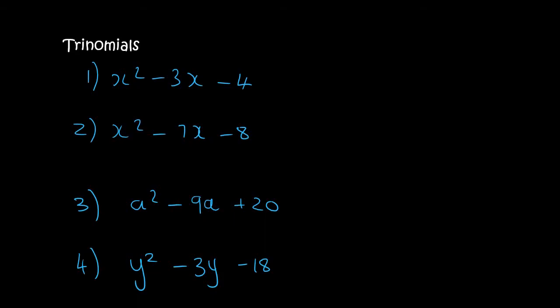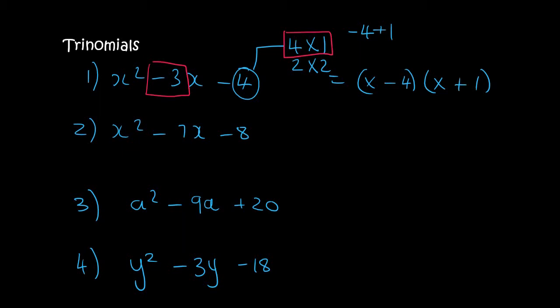With number 1 we look at the number at the end which is 4, and we know that 4 is the same as 4 times 1 or 2 times 2. 4 and 1 could definitely make minus 3 by saying minus 4 plus 1. So we open up two brackets and we have x and x, and then a 4 and a 1. We said that the 4 is negative and the 1 is positive.